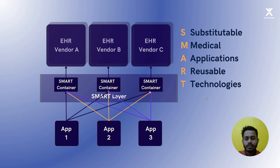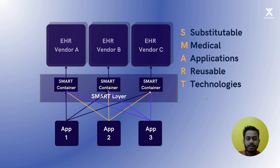Now the application traffic goes through the SMART container, and the developer follows the guideline on how to build the application on top of the SMART container. It now becomes vendor independent, because app 1 supports vendor A, vendor B, and vendor C. The same applies to application 2 and application 3.